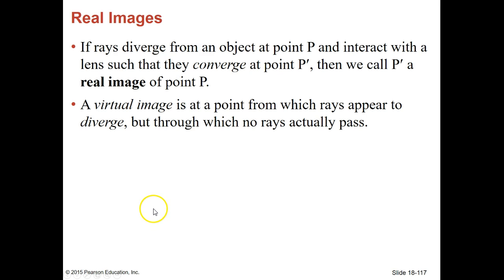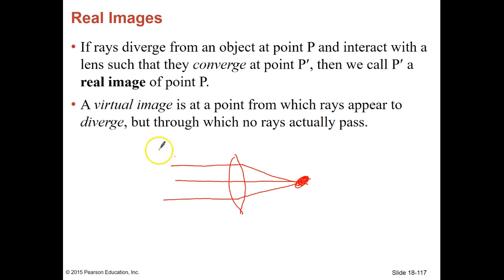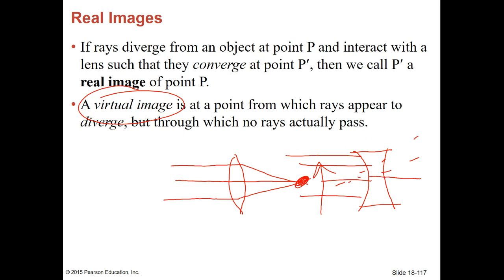If rays diverge from an object at point P and intersect where they converge at point P prime, we call that a real image. The other way to think about real images is that the image is where it should be — when light comes through and gets bent, the image appears on the opposite side of the lens. A virtual image, using a diverging lens, is where all the light comes back through the lens — the light is going this way, your object is on this side, and you get an image on the same side. So we call that a virtual image.